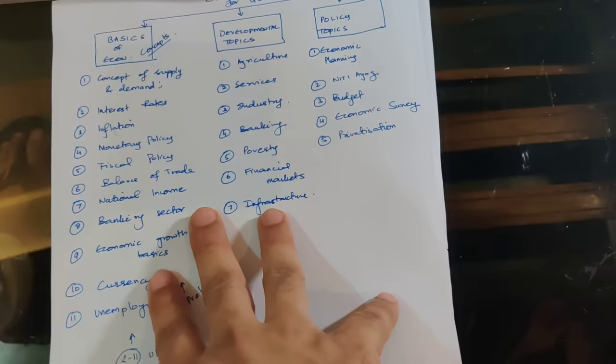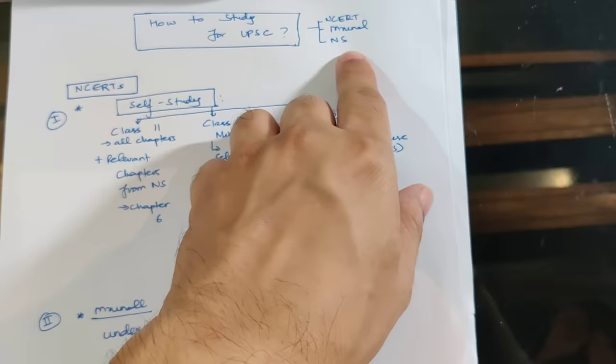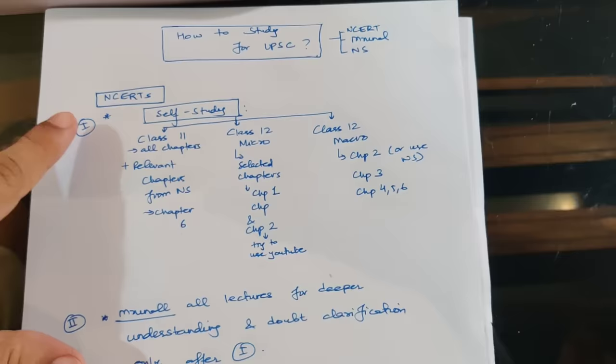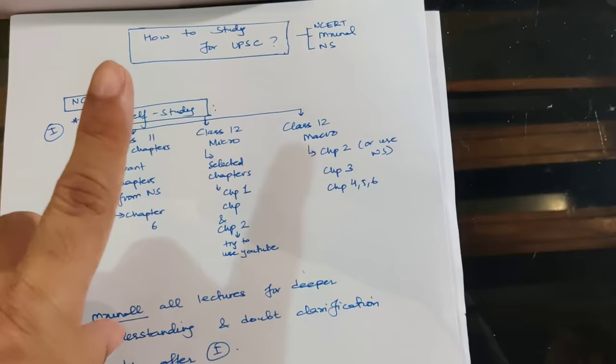Where to read these topics from? For NCERT books, you need three books: the class 11th book, the class 12th microeconomics book, and the class 12th macroeconomics book. For the 12th book there are two books and for the 11th book there is one book.